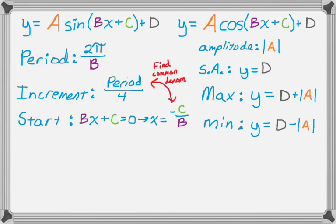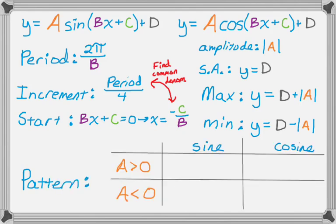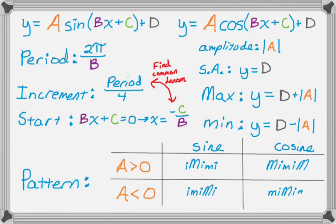There are really only four patterns. If a is greater than 0, the pattern for sine is: intercept, maximum, intercept, minimum, intercept. If a is less than 0, the maximum and minimum switch, so it's: intercept, minimum, intercept, maximum, intercept. For cosine with a greater than 0: maximum, intercept, minimum, intercept, maximum. And if a is negative for cosine, we get the switch again: minimum, intercept, maximum, intercept, minimum. You really have to memorize those.